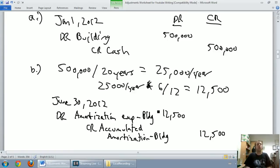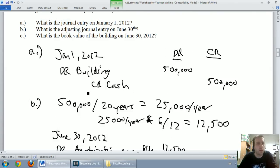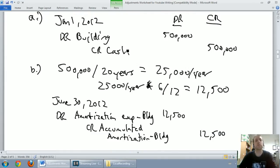So, here we are. We've done our journal entry. We've done our adjustment beautifully, and we're basically done. The final part of the question says, what's the book value of the building on June 30, 2012? Basically, they're saying, what's this building worth on paper? What's it worth according to our books, according to our records, on June 30?